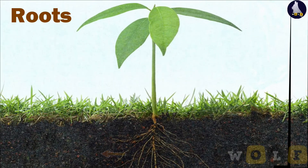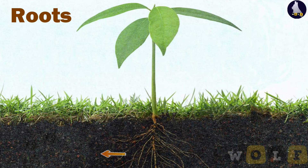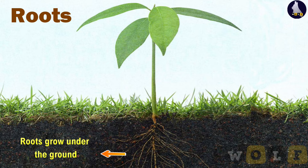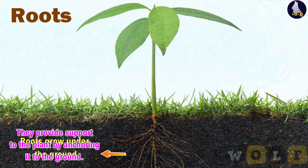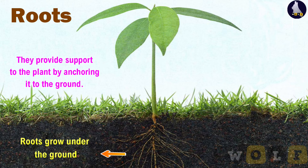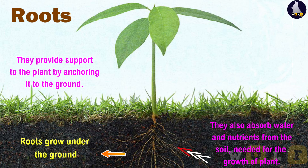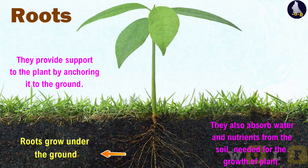Roots grow under the ground. They provide support to the plant by anchoring it to the ground. They also absorb water and nutrients from the soil needed for the growth of the plant.